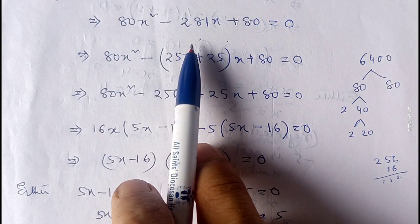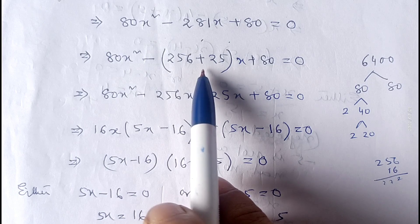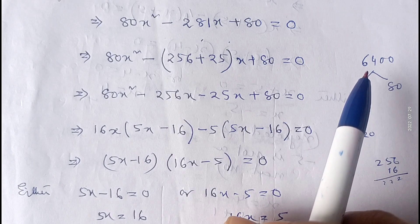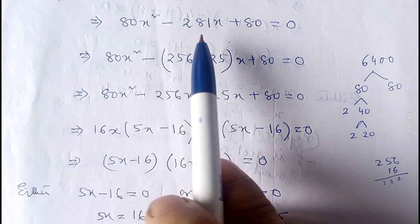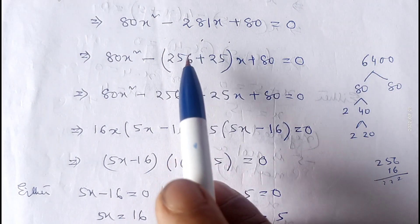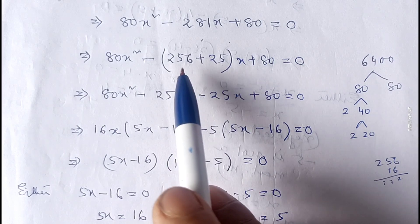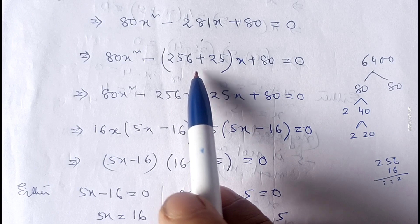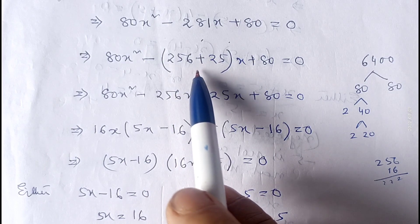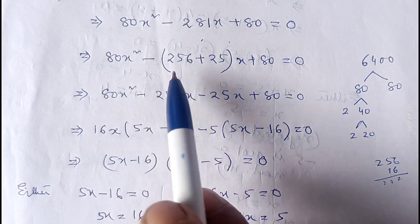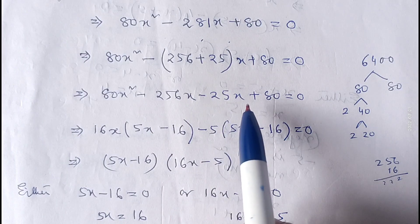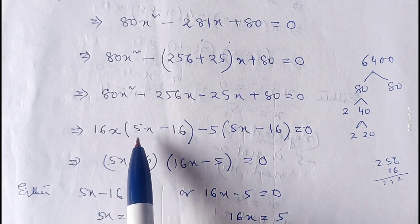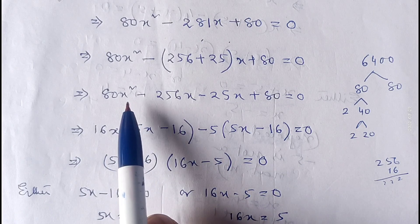We solve by middle term factorization. Here 80 into 80 gives 6400, which is positive, so we need two numbers whose sum is 281 and product is 6400. Prime factorizing, we find 256 and 25: 256 plus 25 equals 281, and 256 multiplied by 25 equals 6400. Sometimes finding these numbers is difficult, in which case you can use the quadratic formula. So we write 80x square minus 256x minus 25x plus 80 equals zero. Taking 16x common from the first two terms, we get 5x minus 16.